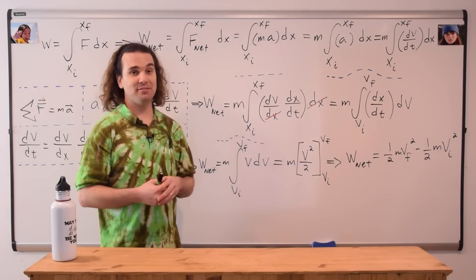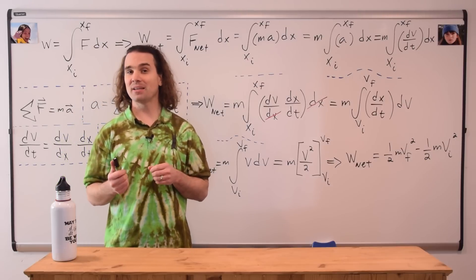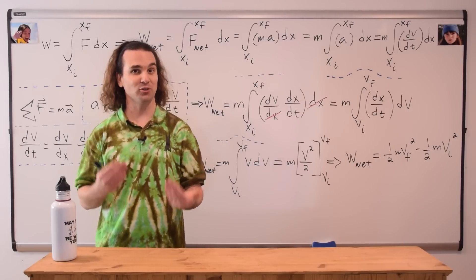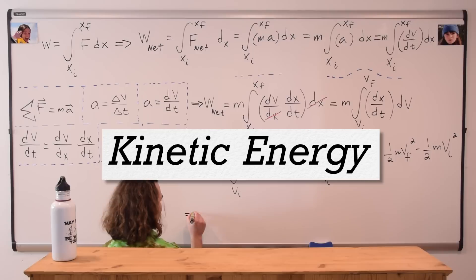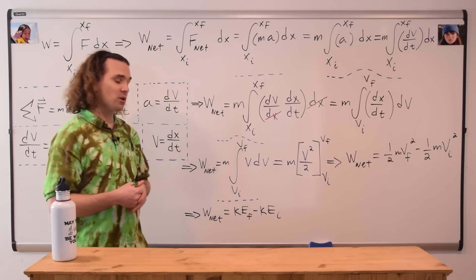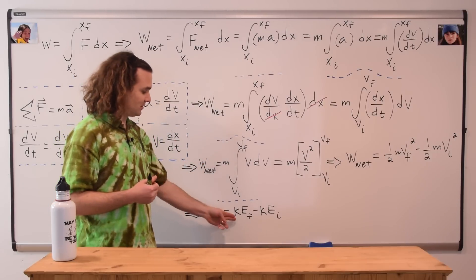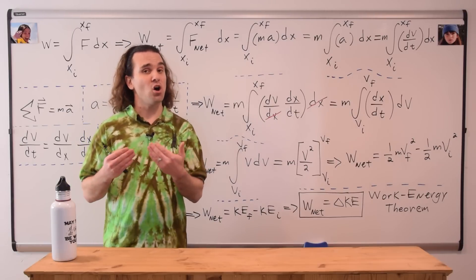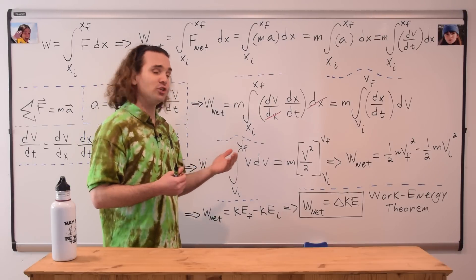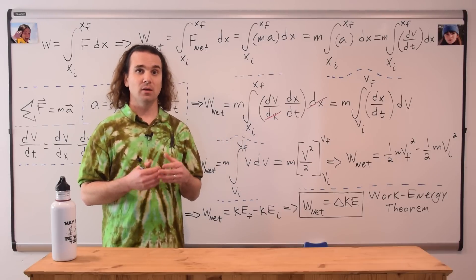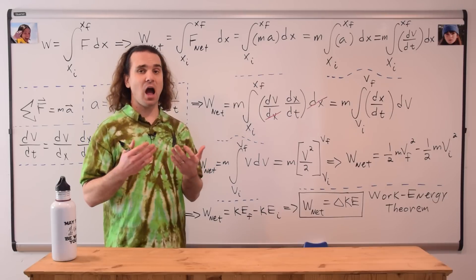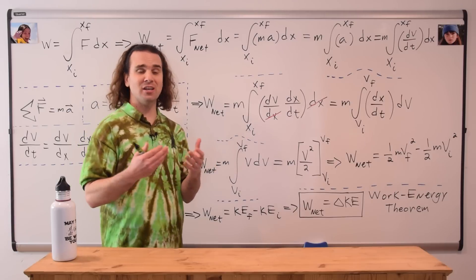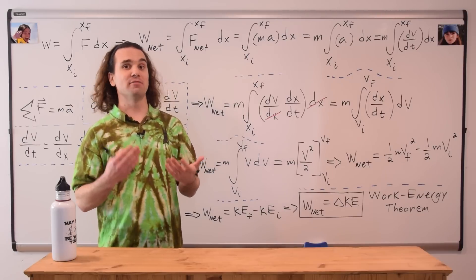Net work equals one-half times mass times velocity final squared minus one-half times mass times velocity initial squared, which is where one-half times mass times velocity squared comes from. We give it a special name: kinetic energy. And it becomes net work equals kinetic energy final minus kinetic energy initial, which is the change in kinetic energy. Therefore, the net work done by all the forces acting on an object causes a change in kinetic energy of that object — the Work Energy Theorem. All the forces acting on an object, the net force, will do work on that object, the net work, which will cause a change in kinetic energy and thus a change in velocity of that object.